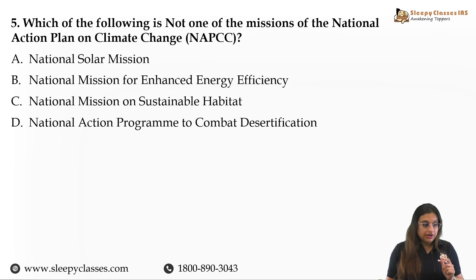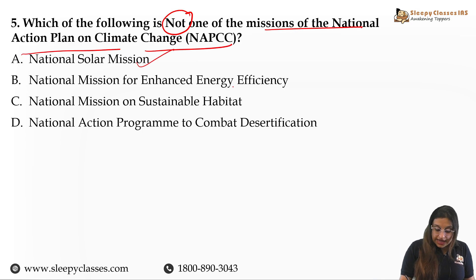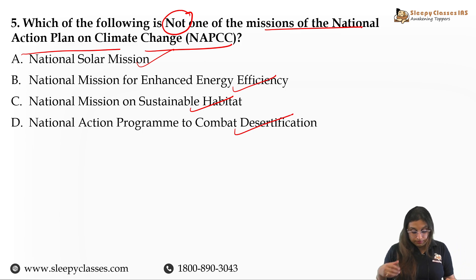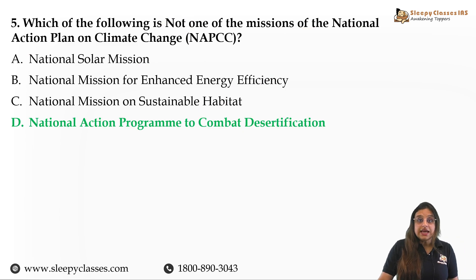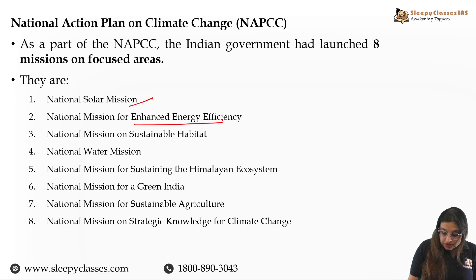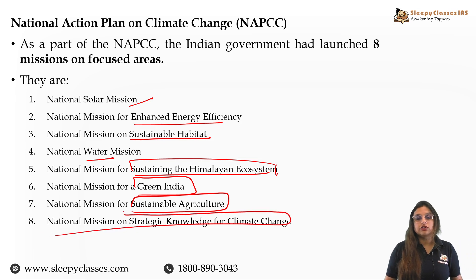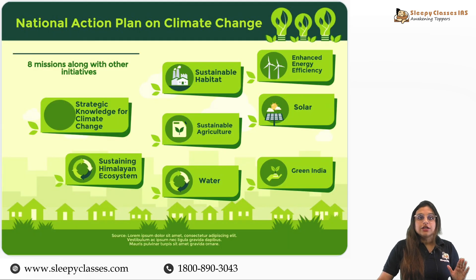The last question: which of the following is NOT one of the missions of the National Action Plan on Climate Change? Options are: National Solar Mission, National Mission for Enhanced Energy Efficiency, National Mission on Sustainable Habitat, or National Action Program to Combat Desertification. The answer is D — Desertification — because in the NAPCC, there are 8 missions from 2008: Solar Mission, Enhanced Energy Efficiency, Sustainable Habitat, Water, Sustaining the Himalayan Ecosystem, Green India, Sustainable Agriculture and Strategic Knowledge for Climate Change. These 8 missions are very important as they are part of NAPCC.